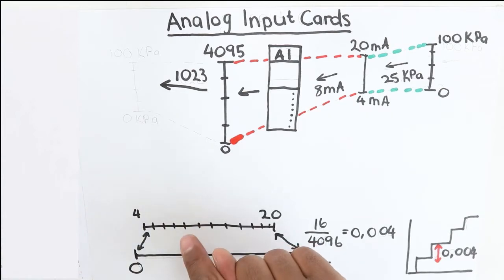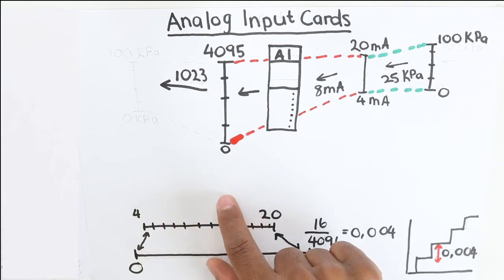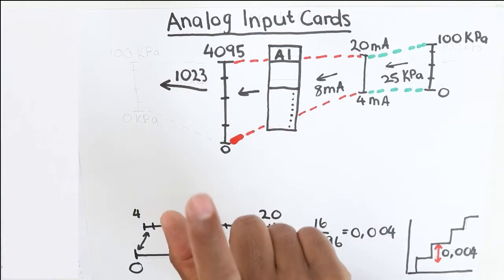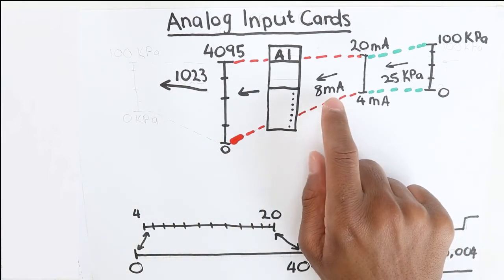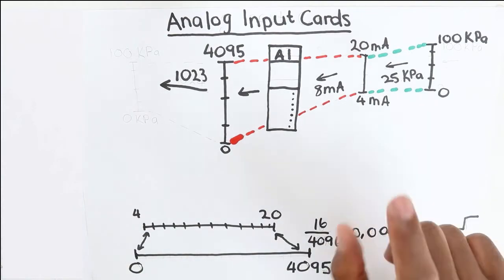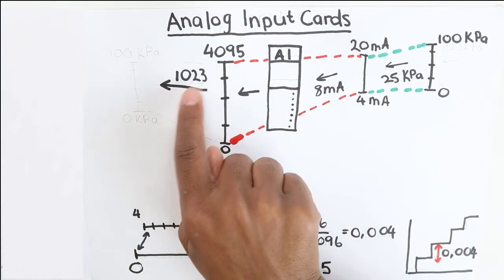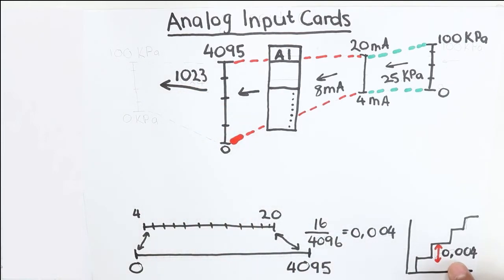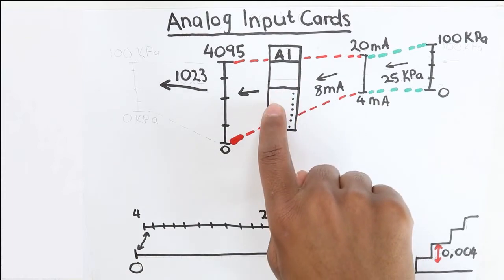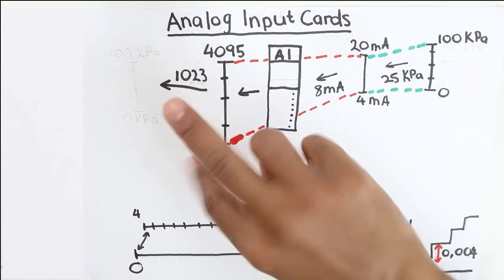Similarly, if the current value is 8 milliamps for example, then we get a value of 1023. And only when this current value goes to 8.004 milliamps will the card then read 1024. So only when the current values step up by this number of 0.004 or step down by this number of 0.004, then the values in the register of this card which represent the current signal will change.